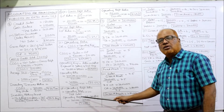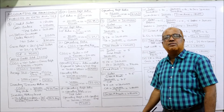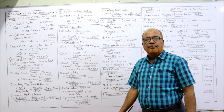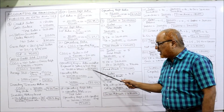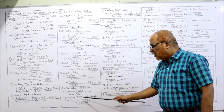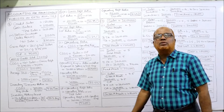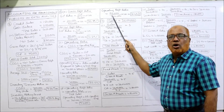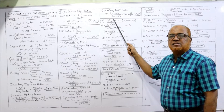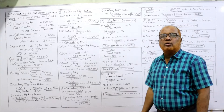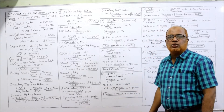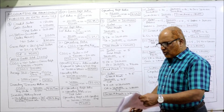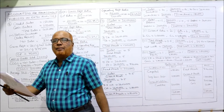Operating profit ratio: formula is operating profit divided by net sales into 100. Operating profit equals gross profit minus operating expenses. Gross profit is 2,01,000 minus operating expenses 1,09,000 equals 92,000. So operating profit ratio: 92,000 divided by 5,60,000 into 100 equals 16.43%. Problem number 9 is finished.